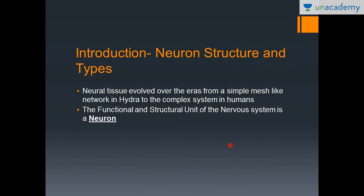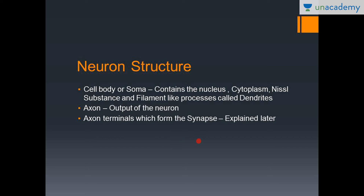The nervous system has evolved over the eras from a simple mesh-like network in the Hydra, a cnidarian, to more complex structures with ganglia in annelids and insects, to the nervous system we see in humans today. Throughout this evolution, the functional and structural unit — the neuron — has remained the same.